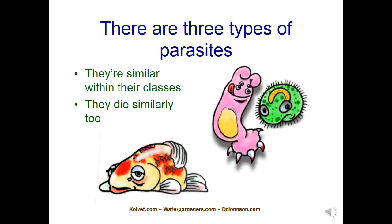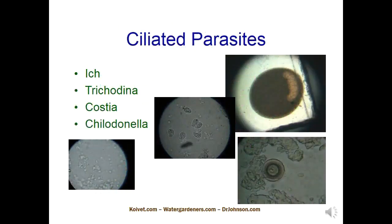I've found Clout very successful with the ciliates. The ciliated protozoan parasites are so named because their bodies are covered in tiny hairs — cilia — which these organisms use to move around. Among the parasites you'll see on tropical fish, pond fish, koi, goldfish, and Siamese fighting fish, it's a small but deadly group of ciliates. I'm going to rank them from most deadly to least deadly. The most deadly ciliated protozoan parasite — for quick kill, chronicity, difficulty to diagnose, and difficulty to treat — is Costia.